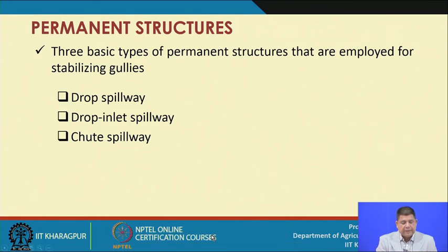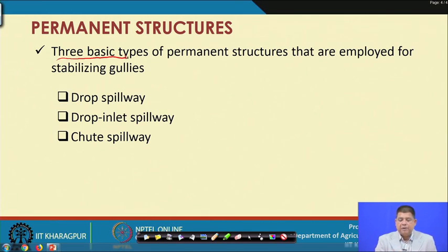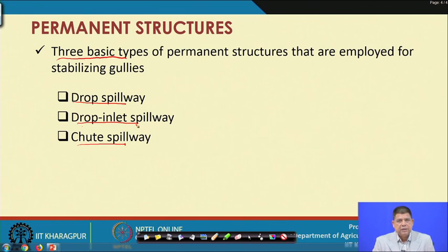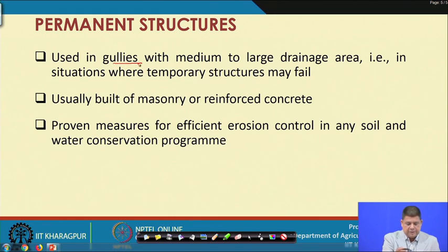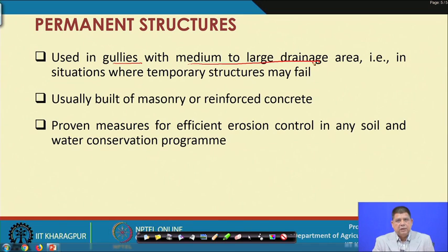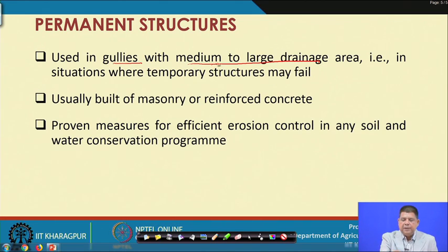There are 3 basic types of permanent structures employed in stabilizing gullies: drop spillway, drop inlet spillway, and chute spillway. Like all gully control structures, they are used for gully stabilization, but here they are typically adapted for medium to large drainage areas, and for situations where temporary structures may fail.